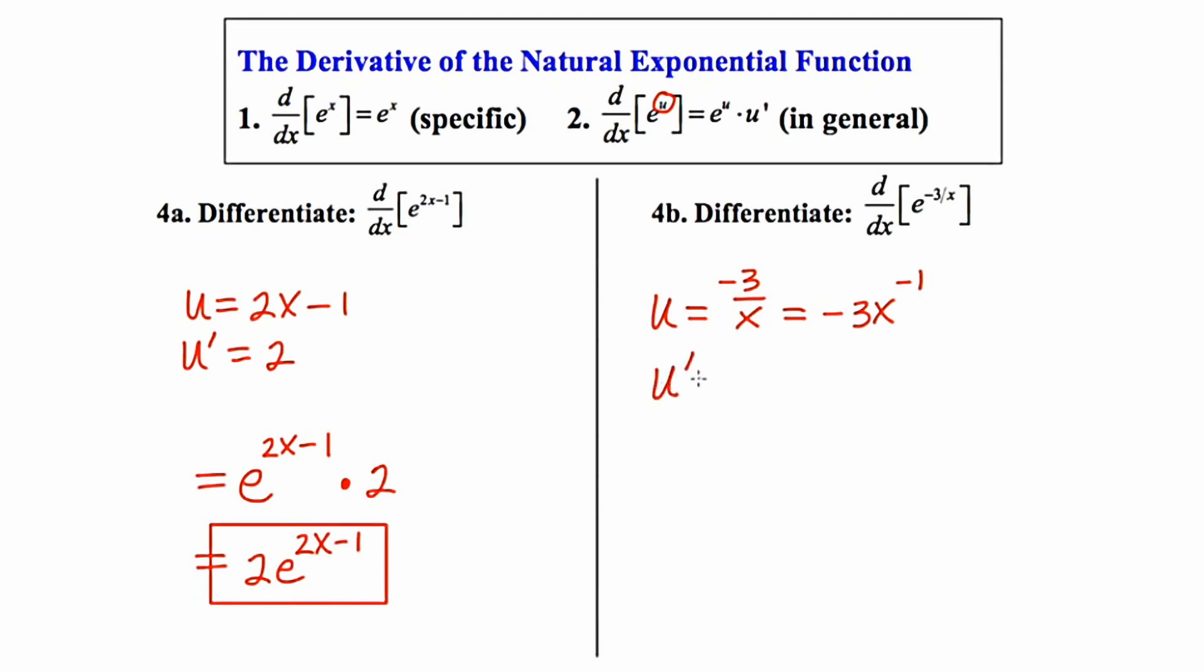u prime equals 3x to the negative 2. Now you're not supposed to leave any answers with negative exponents. So I'm going to do one more rewrite as 3 over x squared.